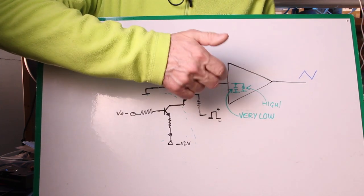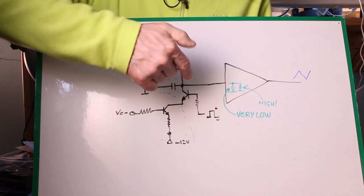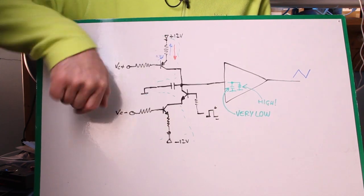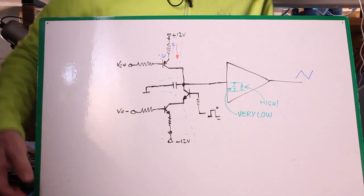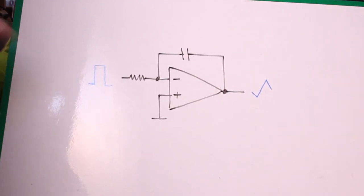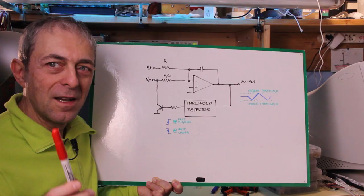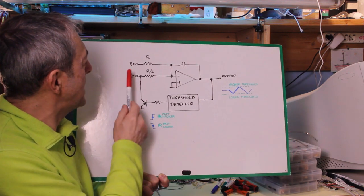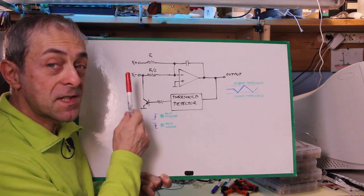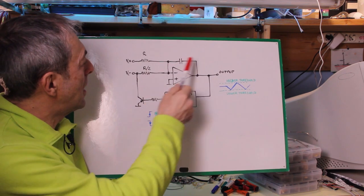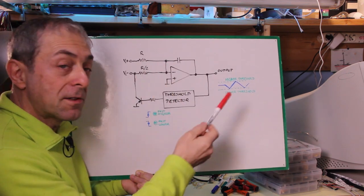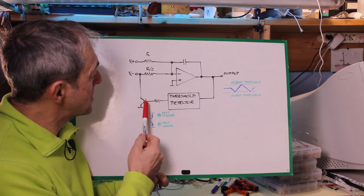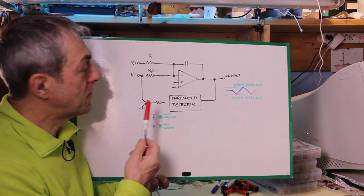This circuit will work, but it requires a high-impedance, very low-capacitance input amplifier to pick up the waveform from the capacitor. A better idea is to use an integrator approach, where we have positive and negative voltages applied to an integrator, a threshold detector, and a transistor that cuts off the negative voltage.